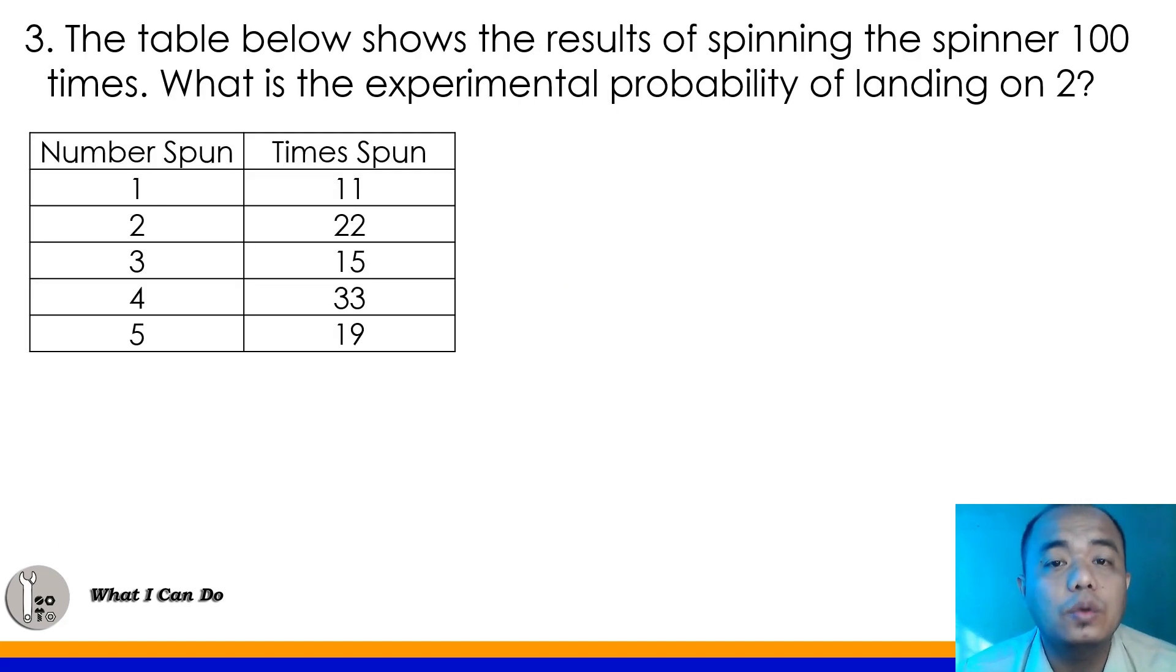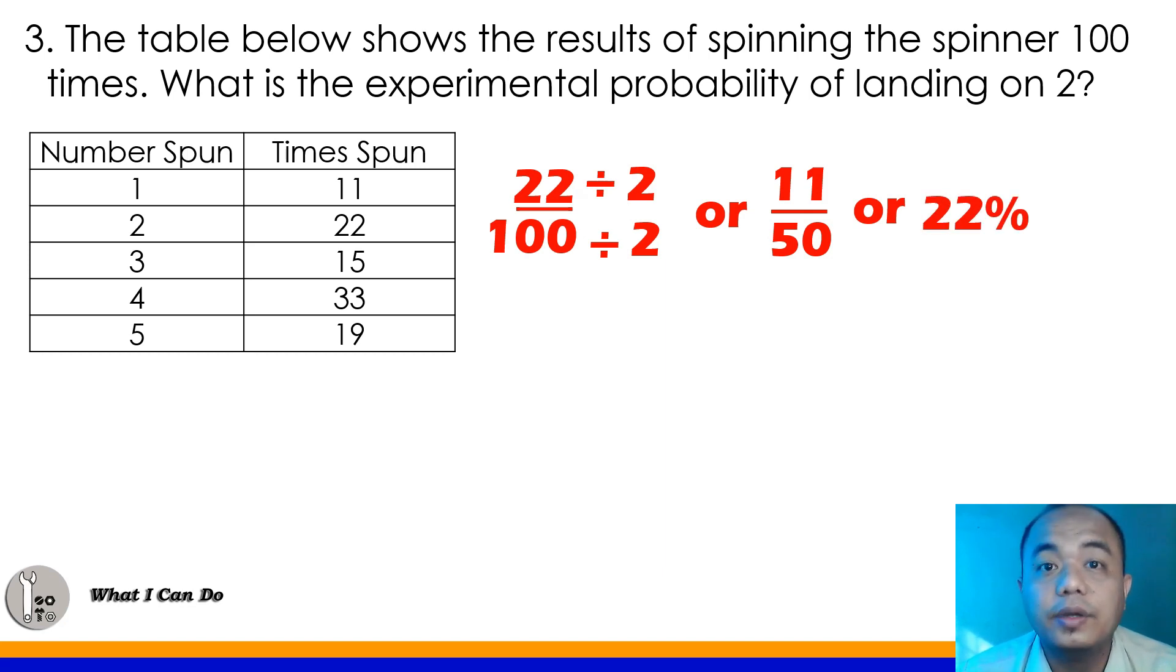Number 3. The table below shows the result of spinning the spinner 100 times. What is the experimental probability of landing on 2? So, here class, we have a result. After spinning the spinner 100 times, this is the result. Number 1 appeared 11 times. Number 2, 22. 3, 15. Number 4, 33. And 5 is 19. The question here is about 2. How many times did 2 appear? Very good. 22. How many total spins of our spinner? Very good. 100. What's the GCF of 22 and 100? Very easy. That's 2. 22 divided by 2 would be 11. And 100 divided by 2 would be 50. Or, that is 22% in percent form.